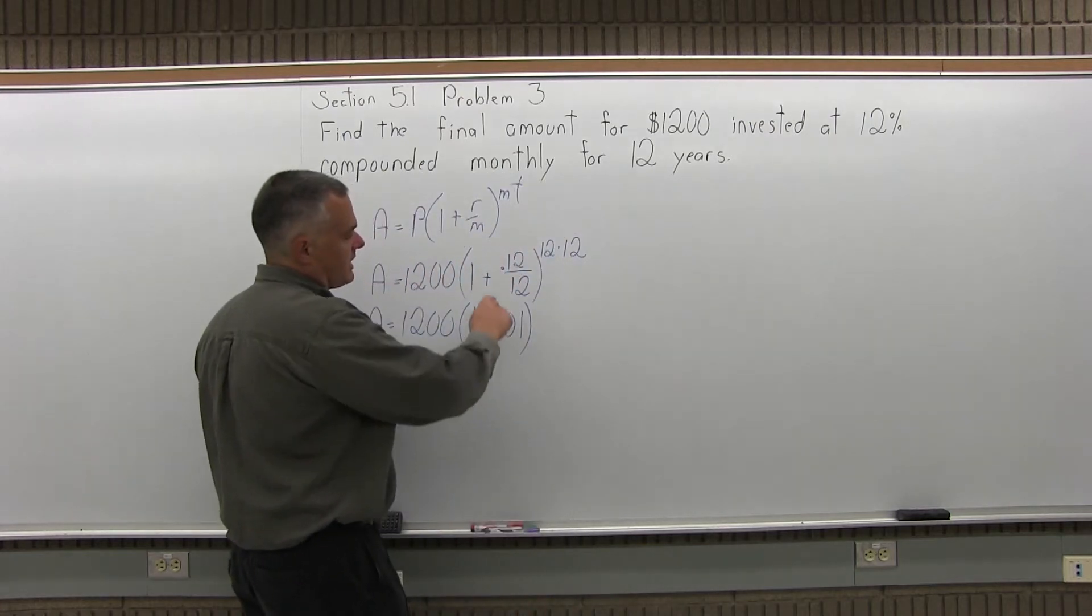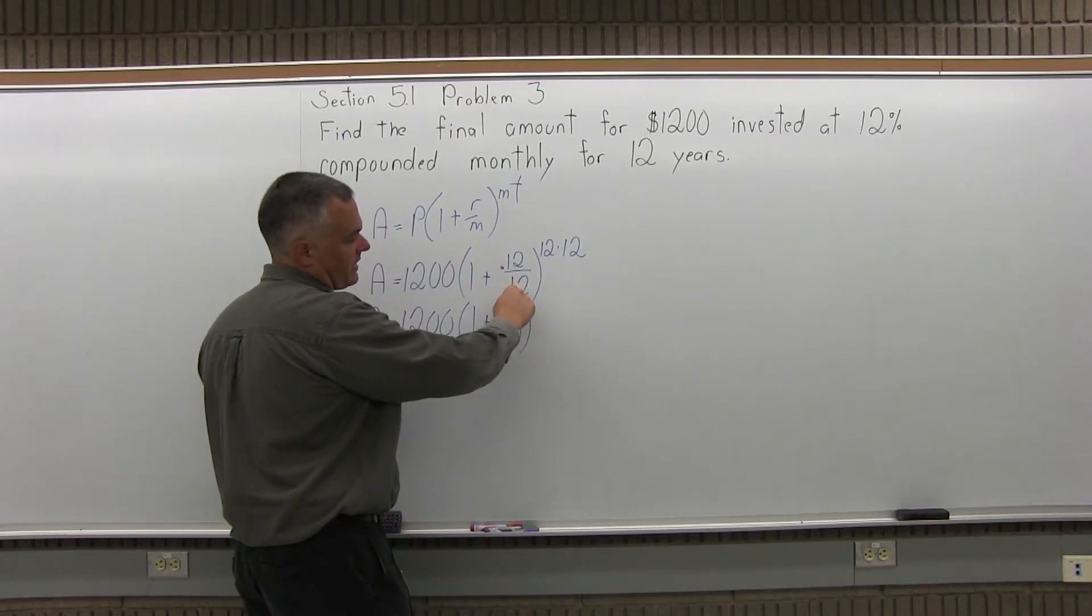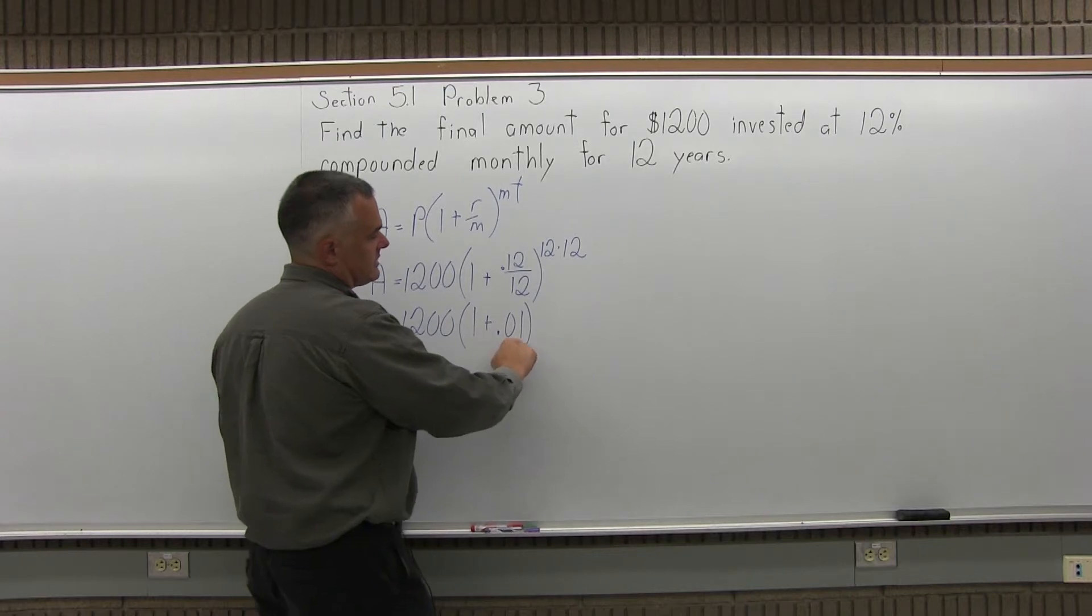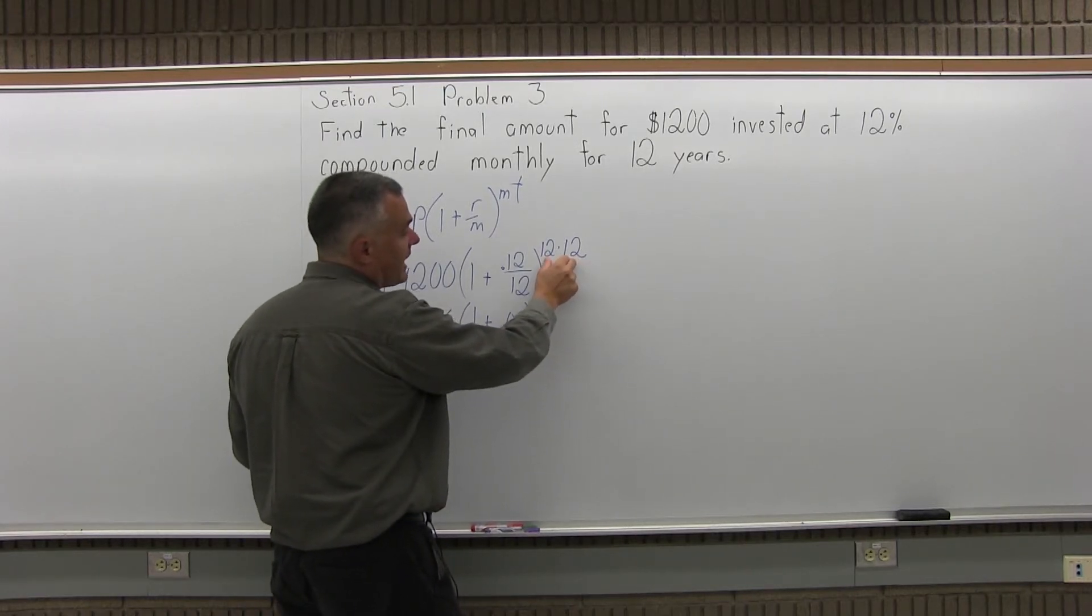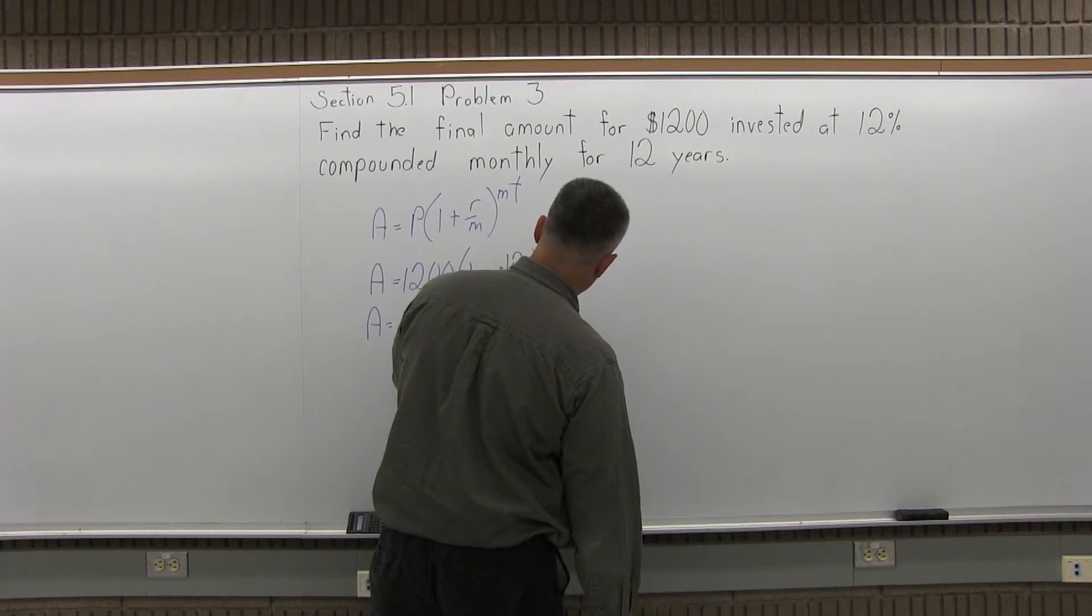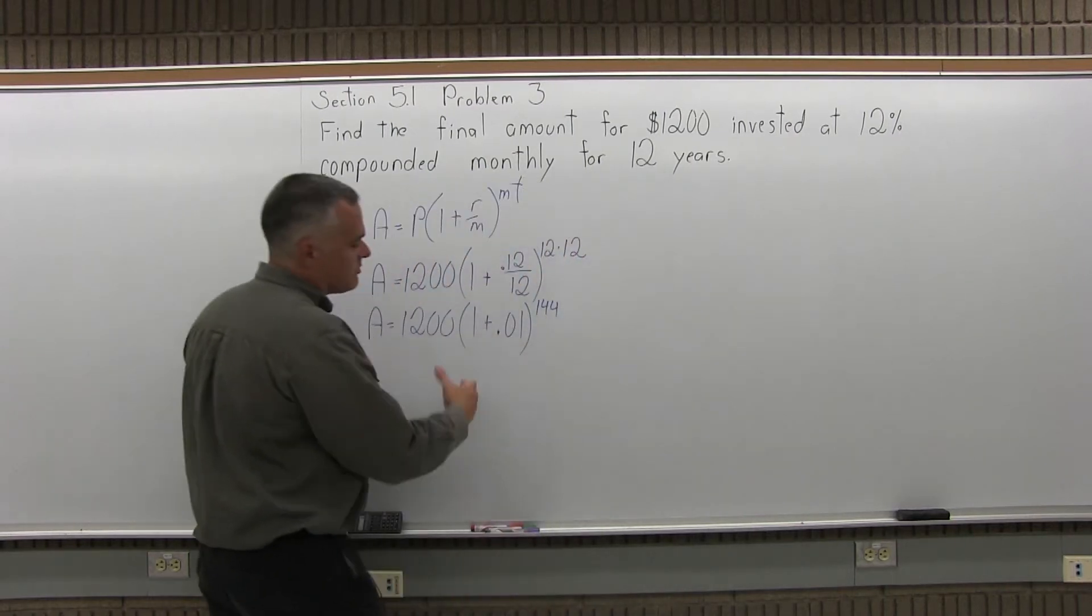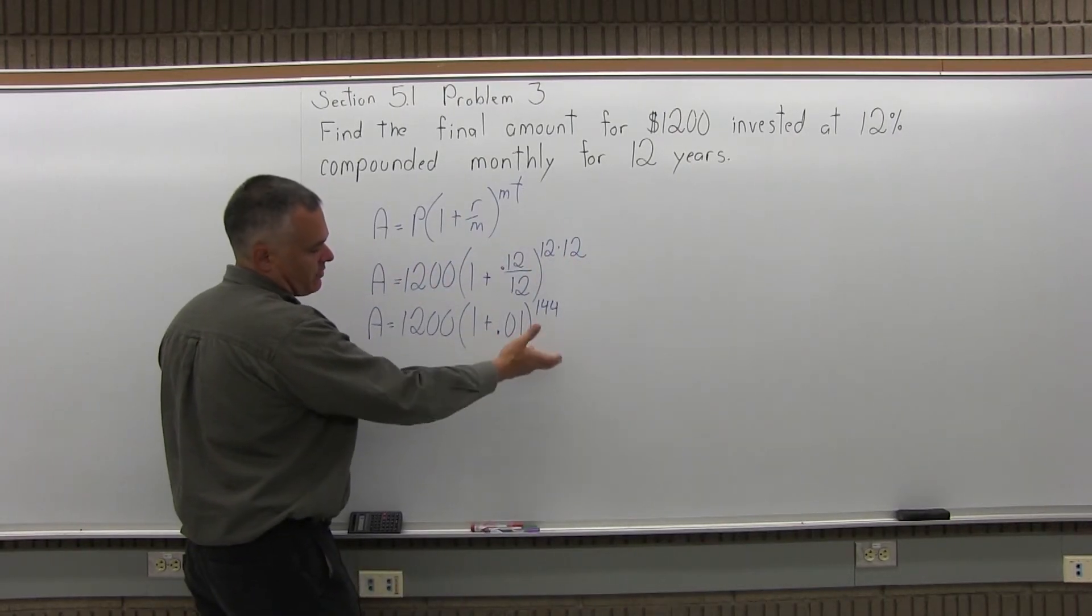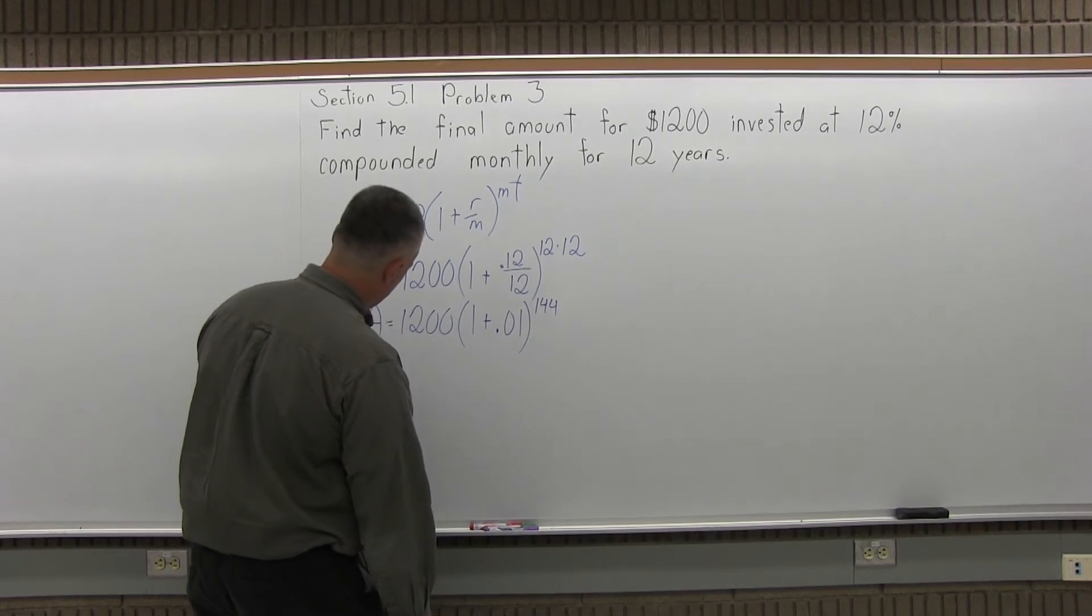And again if you want to do that on your calculator, .12 divide by 12 and it'll tell you it's this, the exponent 12 times 12 is 144. And I can complete the work in parentheses just add the 1 and the .01, obviously that's going to be 1.01.